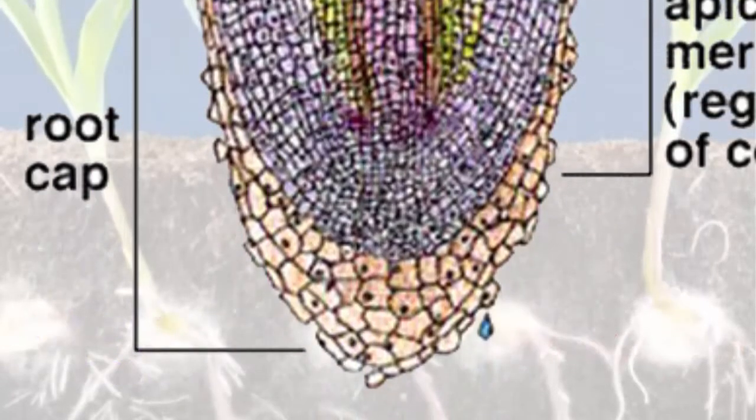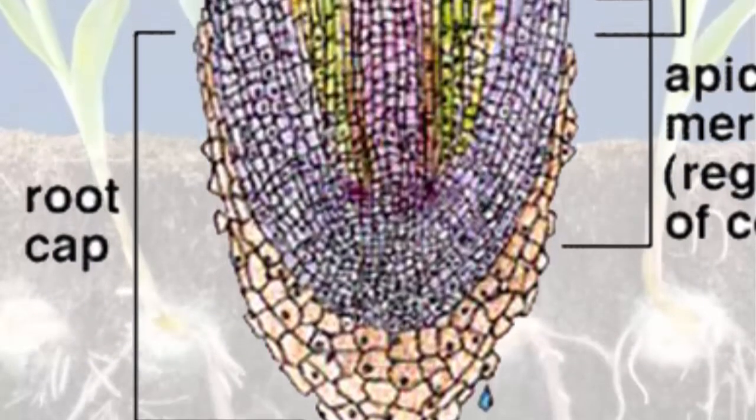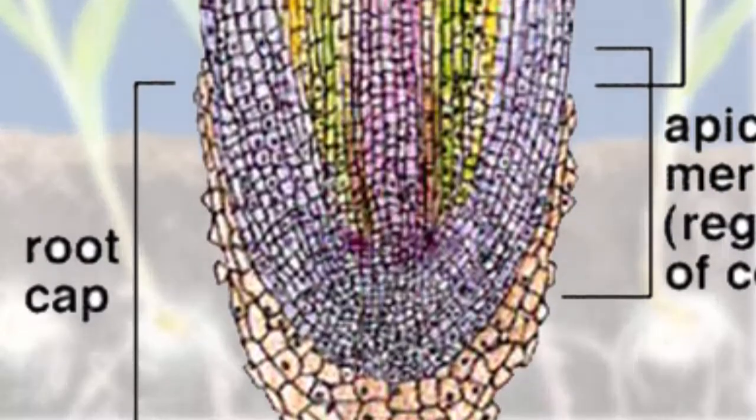It is important to learn that root movement in soils involve mostly the root apical meristem and the root cap while the rest of the roots remain mostly stationary.